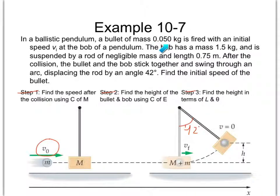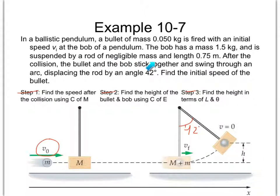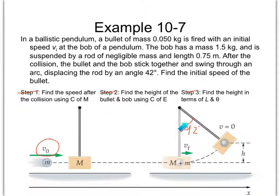We have the mass of the bullet and the mass of the bob. I'll use lowercase b for the bullet and uppercase B for the bob. We've also got the length of this pendulum rod. We're going to ignore the mass of the rod and pretend it's a rigid string without much mass. That's the length of it. When it swings up to an unknown height, the angle it makes with the vertical is 42 degrees.